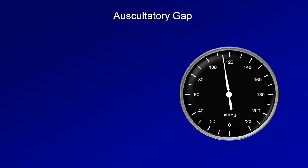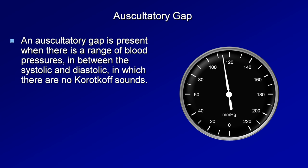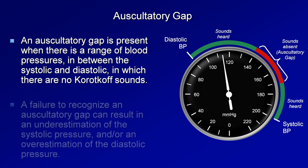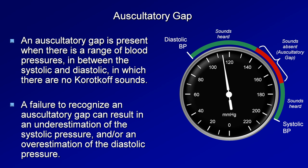Something called an auscultatory gap occurs in a small minority of patients. It is present when there is a range of blood pressures in between the systolic and diastolic in which there are no Korotkoff sounds. It's observed primarily in older patients with a wide pulse pressure — that is, a relatively large difference between the systolic and diastolic pressures. The auscultatory gap is important because a failure to recognize its presence can result in a significant underestimation of the systolic pressure, or an overestimation of the diastolic pressure.